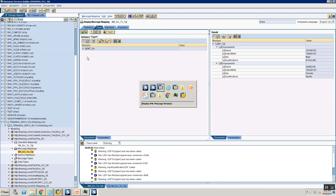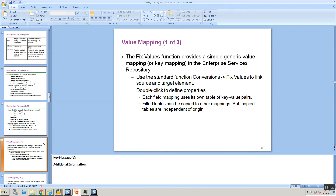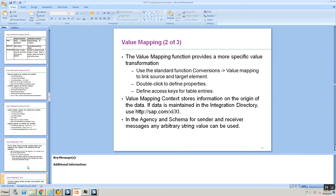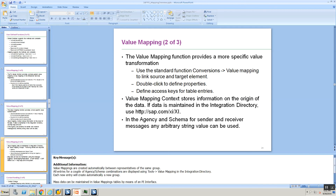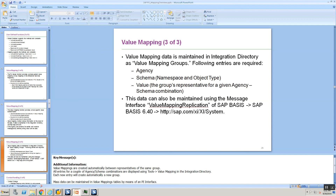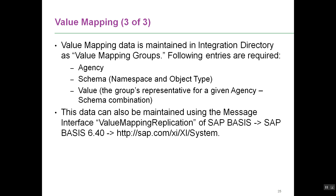The idea behind value mapping is that instead of maintaining key-value pairs inside the message mapping, you maintain them in the Integration Directory, allowing direct changes without a transport. There is also a concept called value mapping by mass replication. If you want to load hundreds of thousands of records, you wouldn't want to maintain them manually. SAP provides a standard value mapping replication interface, and you can also do mass uploads programmatically through something called value mapping replication.